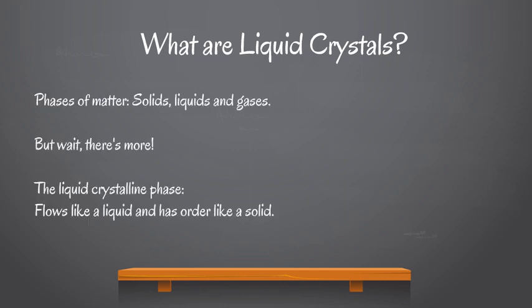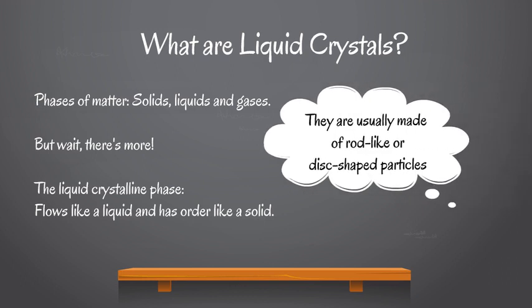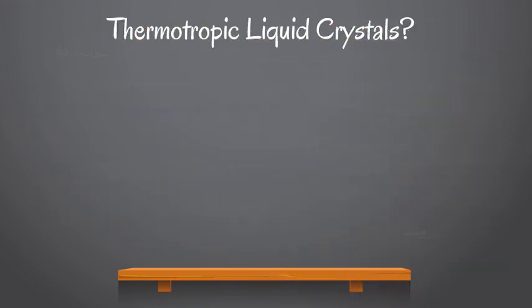The liquid crystalline phase arises in materials that have oddly shaped molecules. Most materials we encounter in life are made up of spherical molecules, and so they are isotropic, which means they have the same properties in all different directions. Liquid crystals, on the other hand, are made of rods or discs and are therefore anisotropic — they have different properties in different directions.